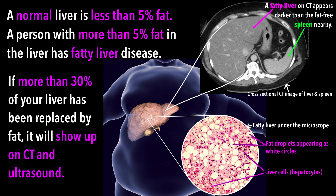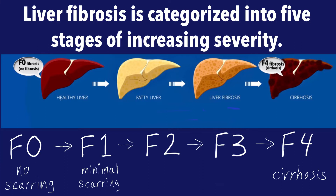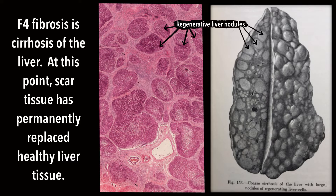If too much of the functional liver tissue has been replaced by scar tissue, you have fibrosis of the liver. Fibrosis, or scarring of the liver, is categorized into five stages of increasing severity, from F0 to F4, with F4 being the worst. Once F4 fibrosis has developed, you have cirrhosis of the liver.